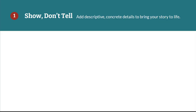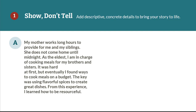Let's go through each of these tips and discuss a couple of examples, starting with the first one. Example A says: 'My mother works long hours to provide for me and my siblings. She does not come home until midnight. As the eldest, I am in charge of cooking meals for my brothers and sisters. It was hard at first, but eventually I found ways to cook meals on a budget. The key was using flavorful spices to create great dishes. From this experience, I learned how to be resourceful.'